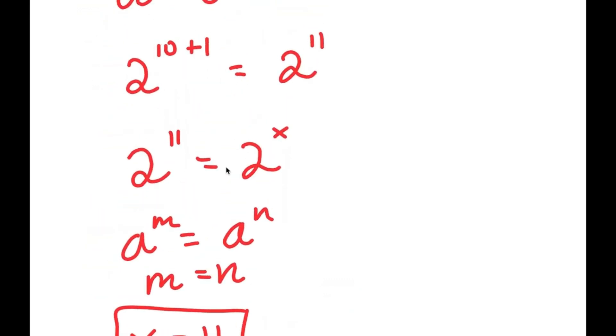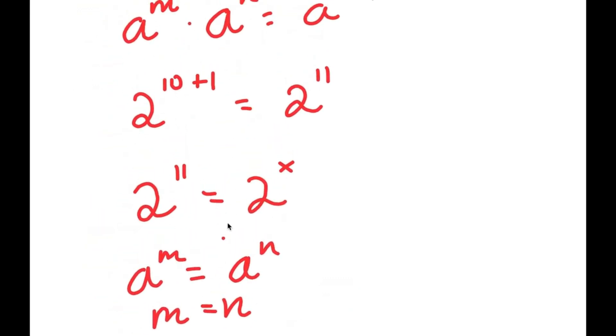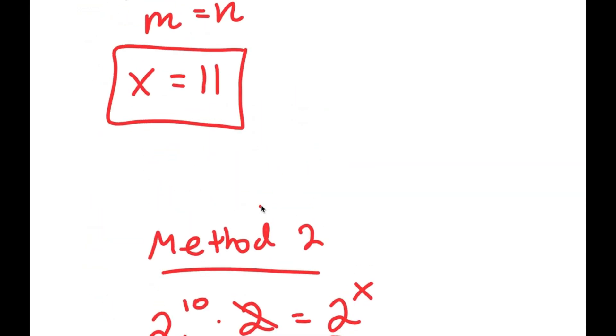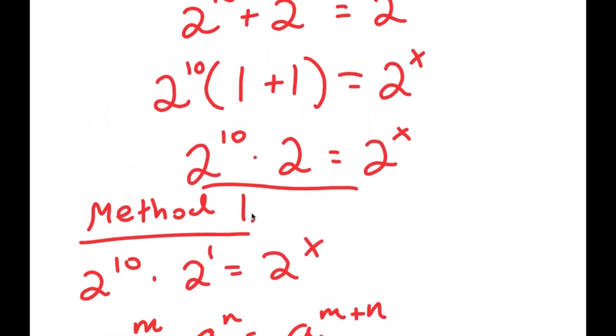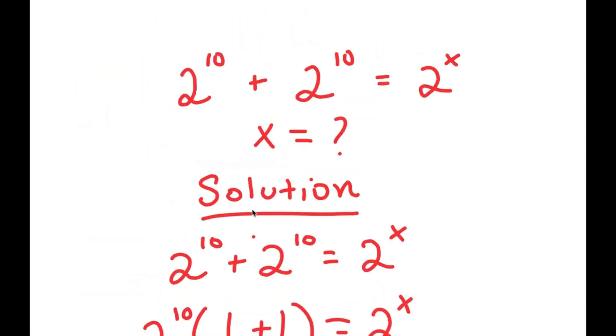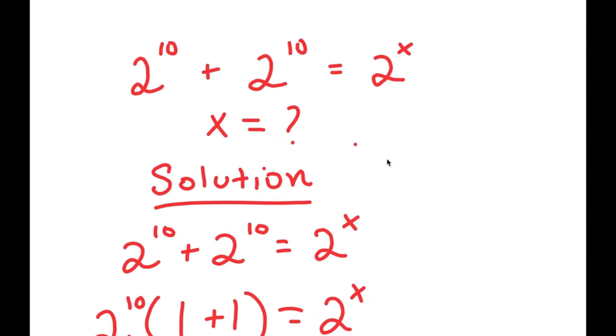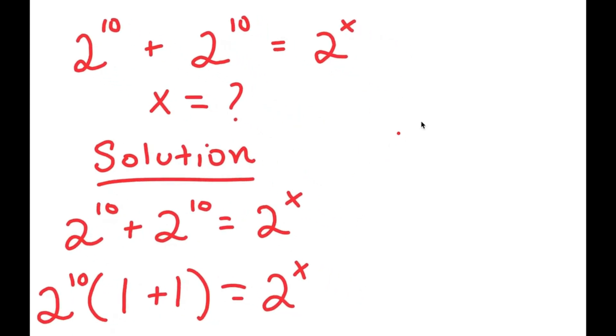So as you can see, these are the two methods, and Method 1 is actually much simpler — it only took a couple of steps compared to Method 2. Now the final step we always have to do is to check our answer.